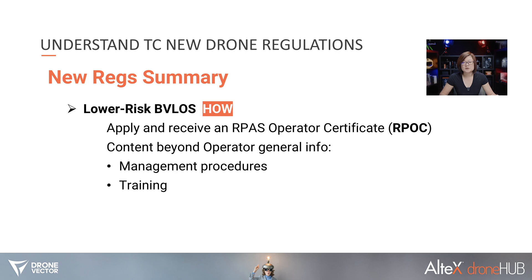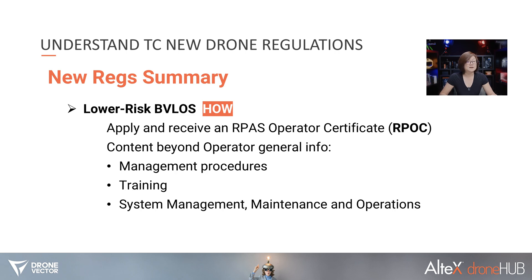Continuous training is important, and if this is a multi-person team, then other people in the team — how do you train your visual observer if you choose to use them? How do you train your equipment maintenance and management team if you have a designated team updating firmware, checking equipment? And also training inter-team — how to make sure everyone can coordinate and work well together. There's also system management, maintenance, and operations information that needs to be included.